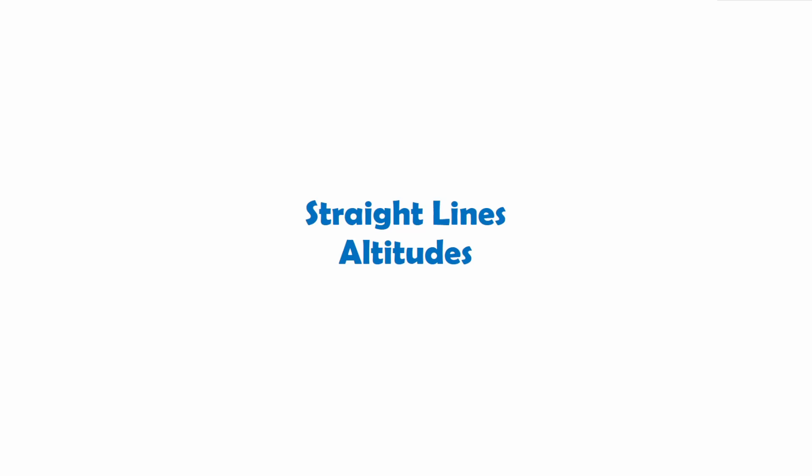So the next type of straight line that we're going to be covering at higher is an altitude. Now like we did with medians, we're going to start off by defining what an altitude is. We say that an altitude, which you might have heard of before, is to do with height and things like that.